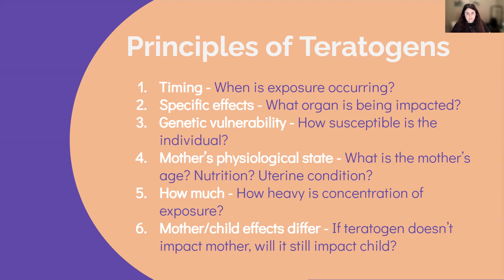Nutrition and uterine condition can also make a difference. Number five is how much — the concentration of the exposure. As we can probably guess, the greater the concentration, the greater the risk. And number six is that mother-child effects will differ. The effect of a disease on a mother might be minimal, but it could be major for the child. Rubella is an instance of this — it'll have little effect on the mother but very serious effects on the child, which we'll talk about in a bit.